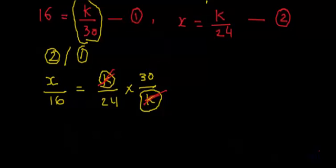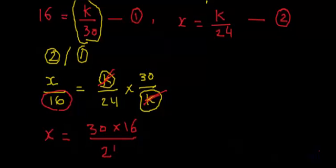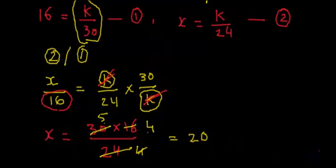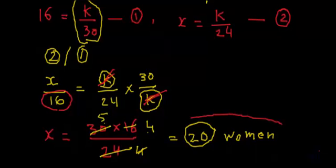Now let's solve further. We multiply both sides by 16 because 16 is in the denominator on the left hand side and we want x alone. So x equals 30 multiplied by 16 divided by 24. Simplifying: 24 and 30 share a factor of 6, giving 5; and 16 divided by 4 gives 4; so x equals 5 times 4 which equals 20. So we will need 20 women to reap the field in 24 days. This was one example of inverse proportion.